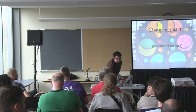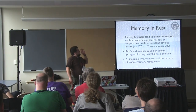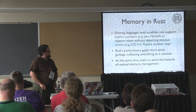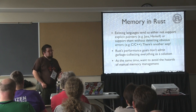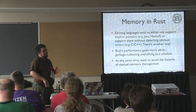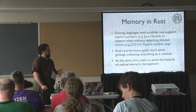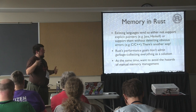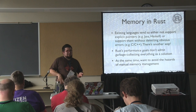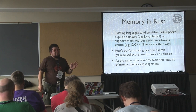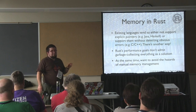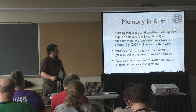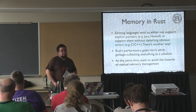Now, a change of gears to memory in Rust. Existing languages either have no explicit pointers — like Java or Haskell — or support them without catching common errors, like C and C++. In Rust, all memory can't just be garbage collected, since systems programmers won't accept that even with optional GC. The problem Rust takes on is allowing manual memory management while making it safe.